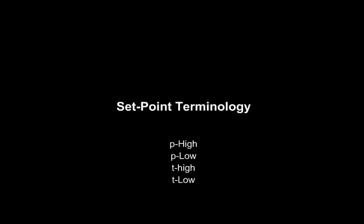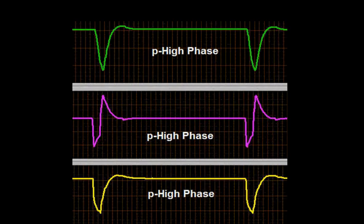APRV Set Point Terminology. The P-High phase — P-High is the upper CPAP or pressure setting. P-High regulates inspiratory lung volume and is analogous with mean airway pressure. This image demonstrates the P-High phase during APRV.